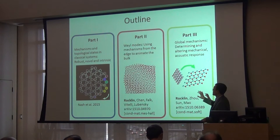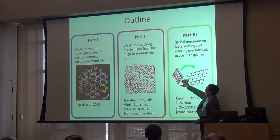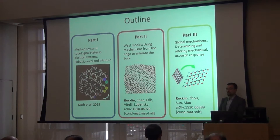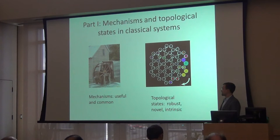If you have an isostatic lattice, you can transform it through zero energy — there's no energy cost to rotating at hinges. When you do that, you get a different topological state with different physical properties. I welcome questions and comments in the middle of the talk if anyone wants to jump in. Mechanisms and topological states of classical systems: mechanisms are useful and common; topological states are robust, intrinsic, and something new. We're going to see how we can put them together.